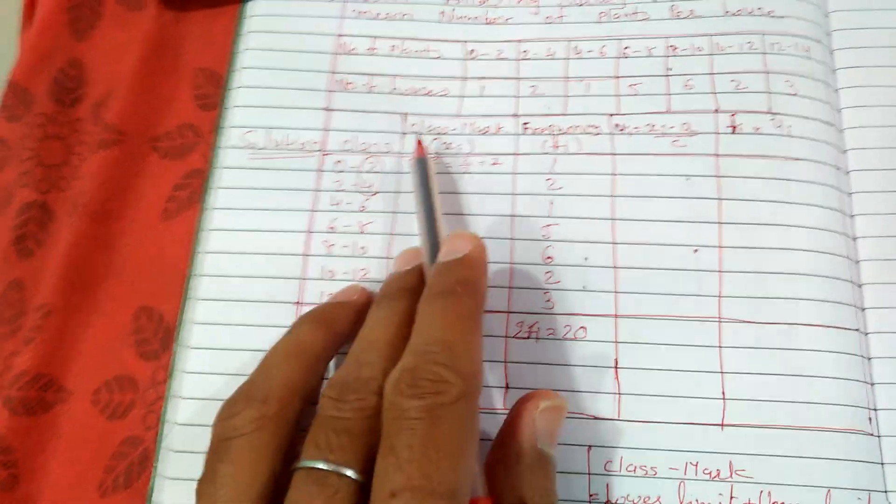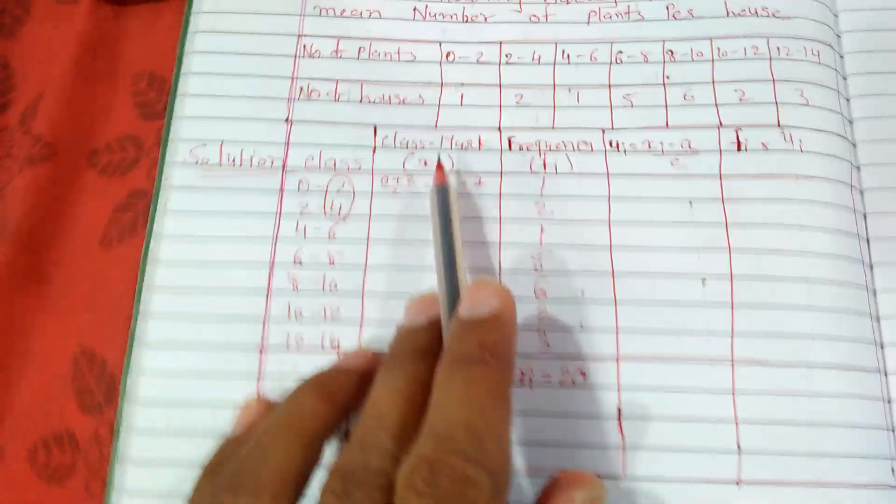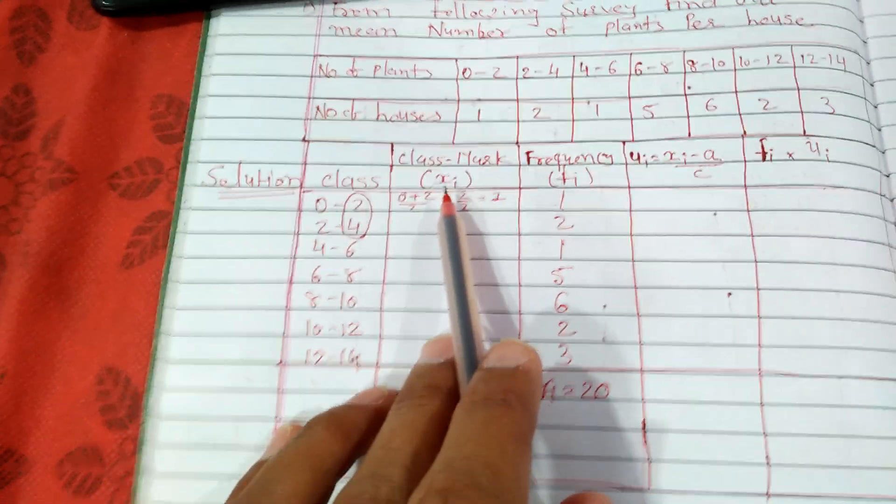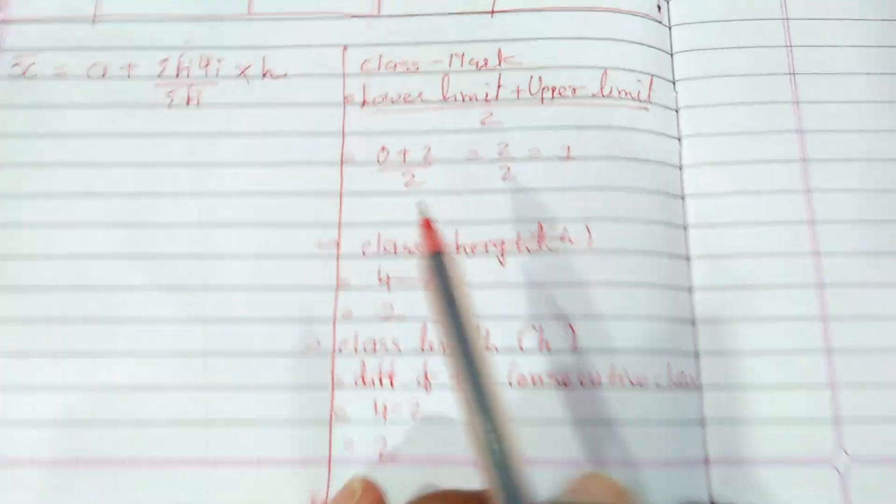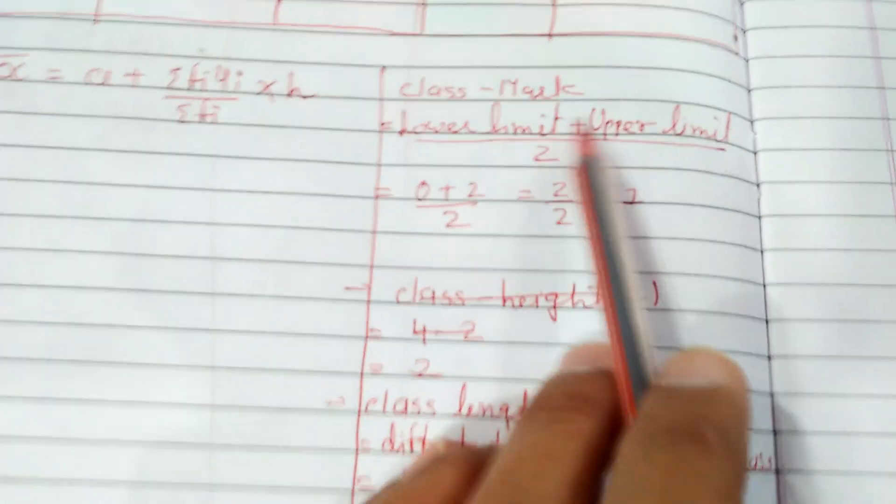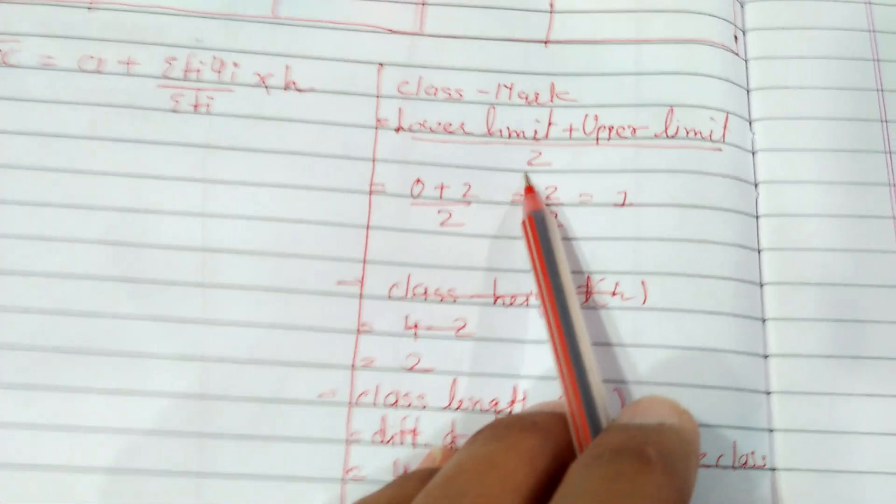Let us move towards the second column, which is of class mark. It is represented by Xi. The formula to find class mark is lower limit plus upper limit divided by 2.